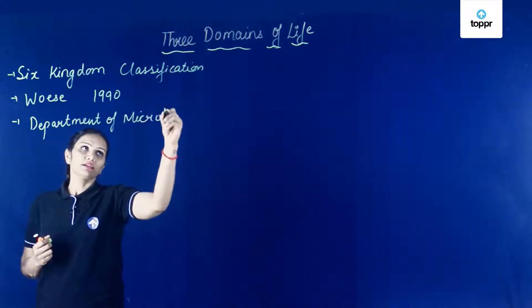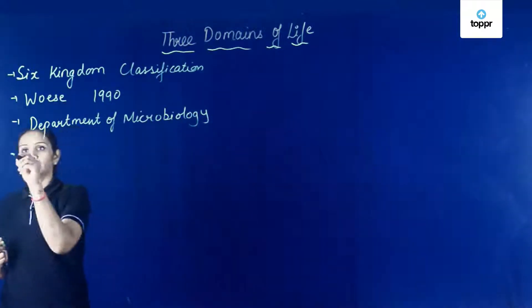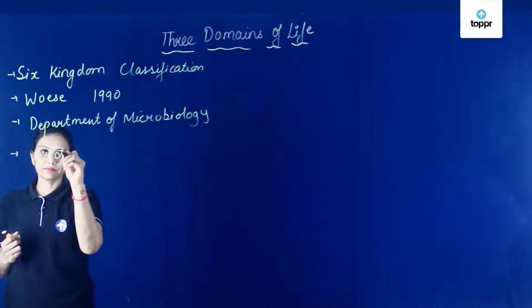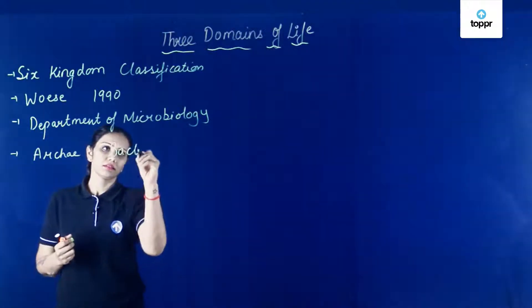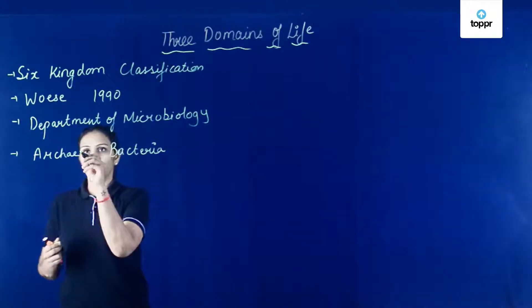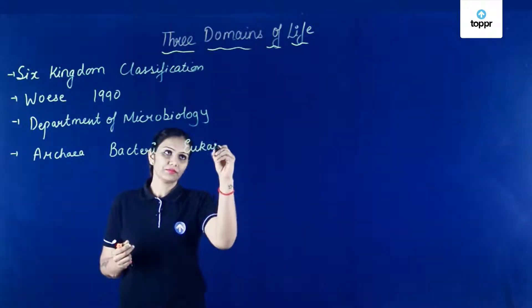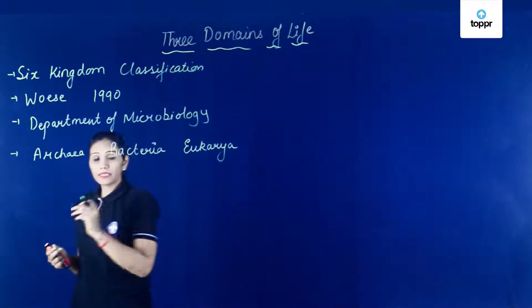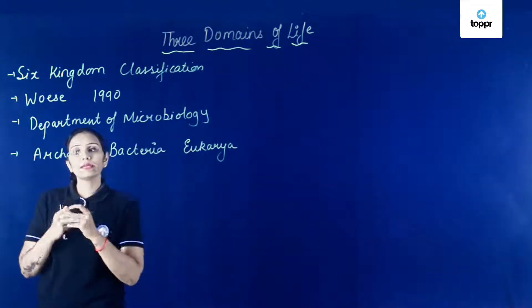Inhone three domains diye, and the three domains are Archaea, Bacteria, and Eukarya. Inhone ye three domains diye. Unka argument kiya tha?